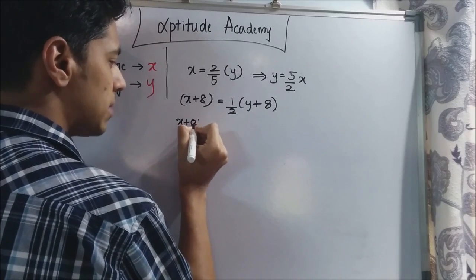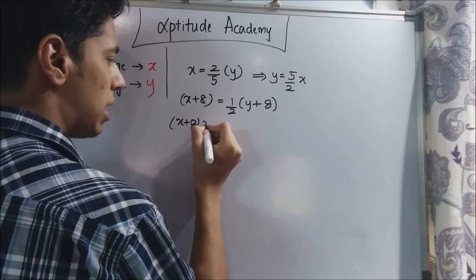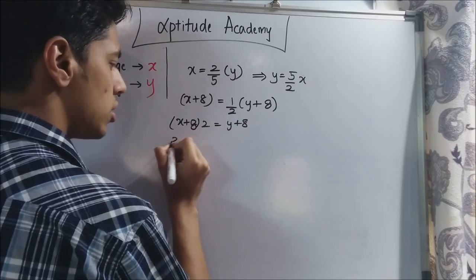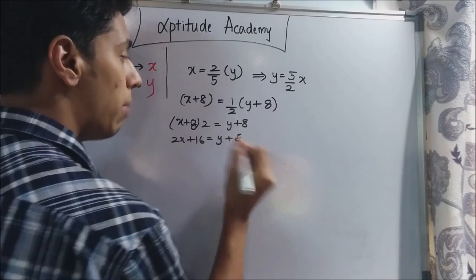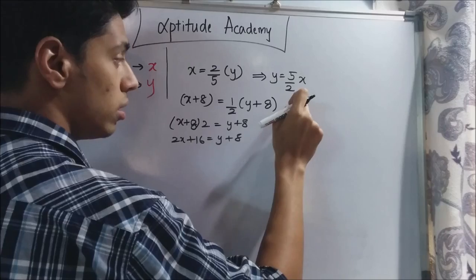x plus 8 into 2, I am multiplying this here, is equal to y plus 8. So this is 2x plus 16 is equal to y plus 8. But we know that y is 5 by 2 into x.